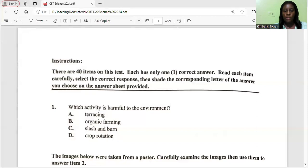As per usual, we know that the CBT papers consist of 40 items and we are only selecting one card. Let's look at the first question: which activity is harmful to the environment? And that's slash and burn. We've been warned against slash and burn for many different reasons.